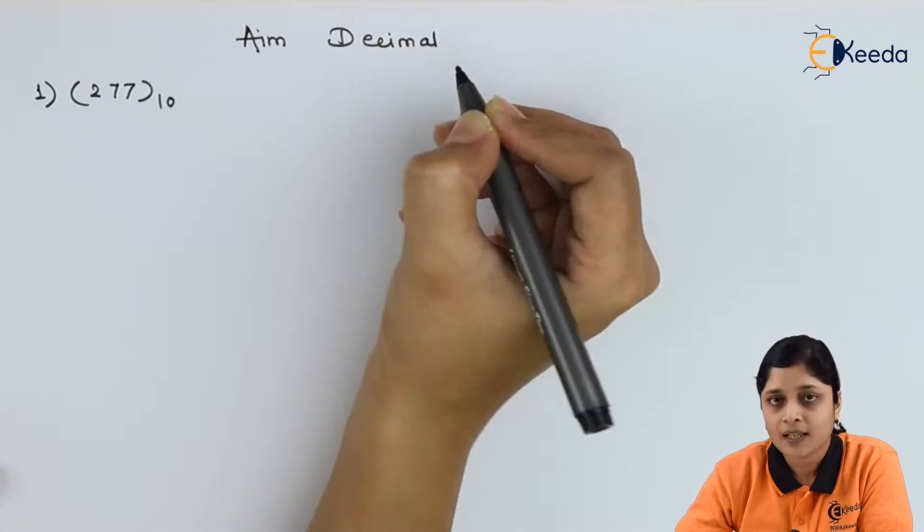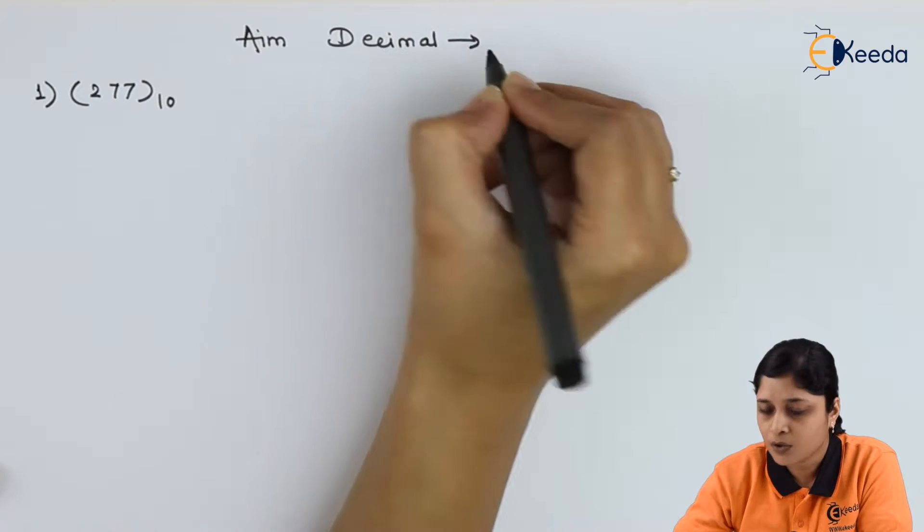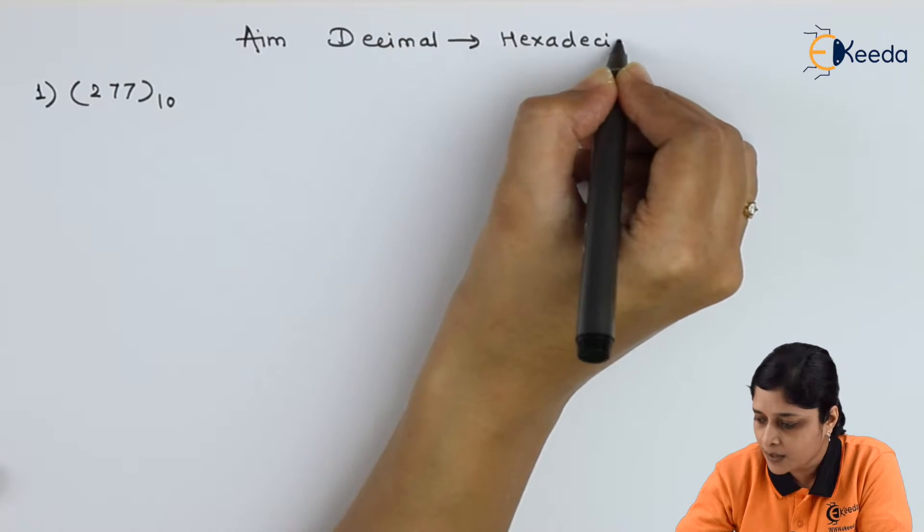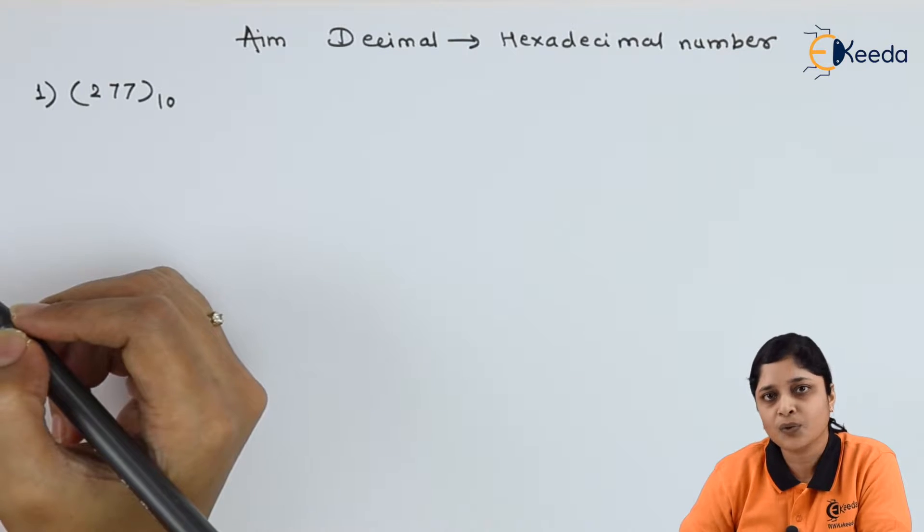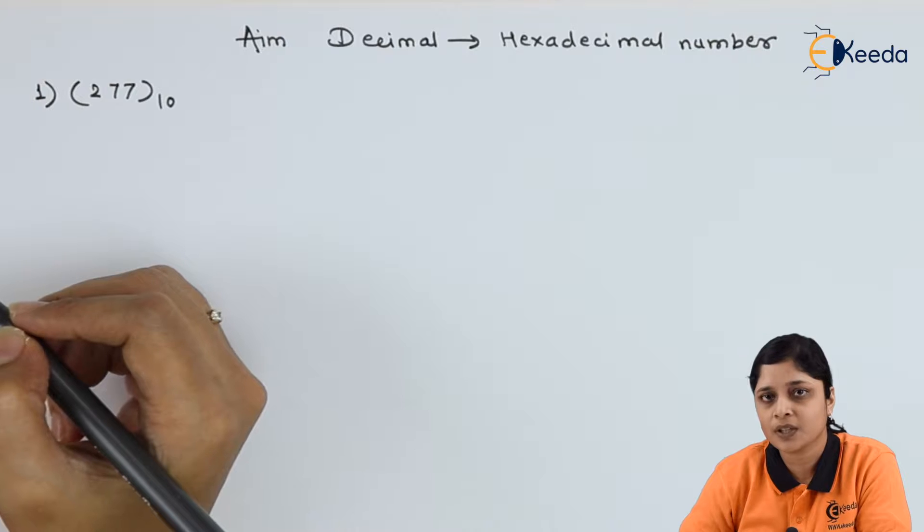of decimal number to hexadecimal number. Here you have to apply successive division method approach.